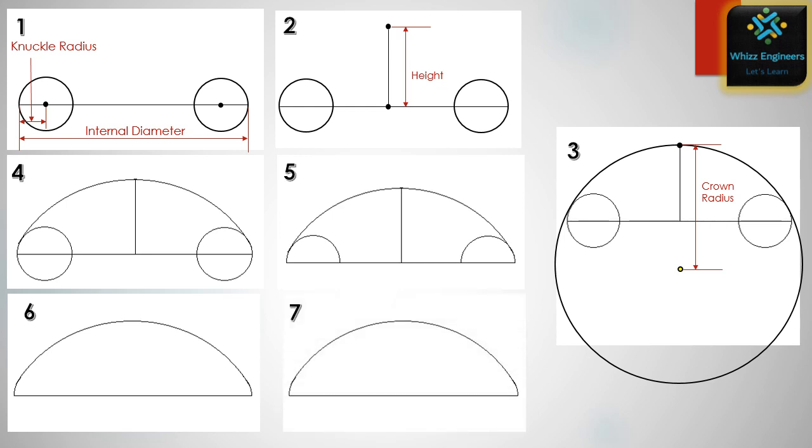Now we have to draw straight face. We have to mark one straight line just parallel to our internal radius line or internal diameter line. Then we have to join this and we will get our TORI spherical head template with straight face.